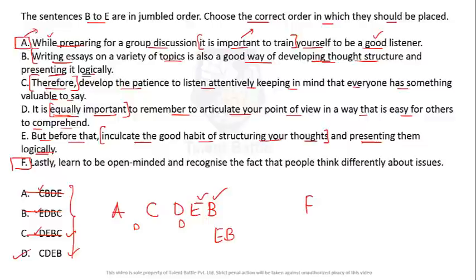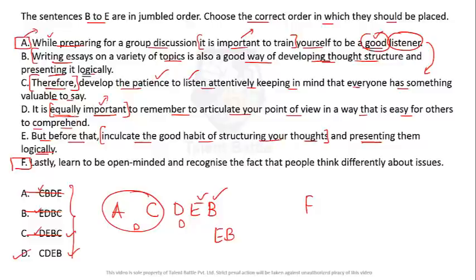The order C, D, E, B is more logical than D, E, B, C because A and C together complete the point about listening, then D introduces the equally important new point about articulating your view — which is unrelated to listening. So the full order A, C, D, E, B gives the most coherent structure. The answer is option D.